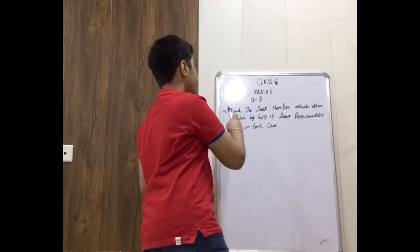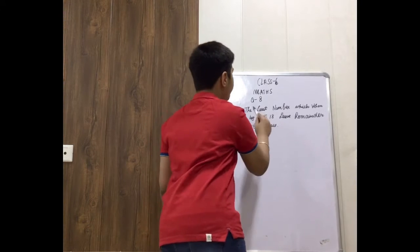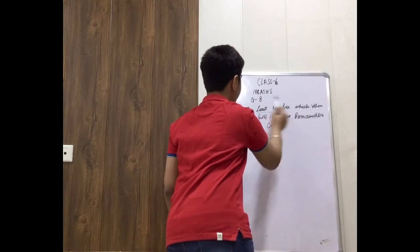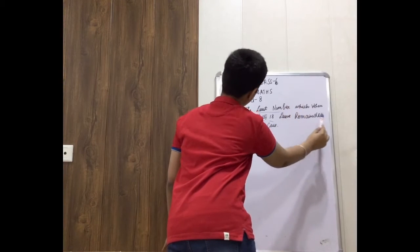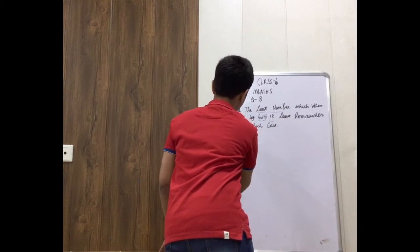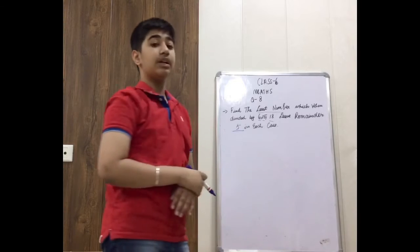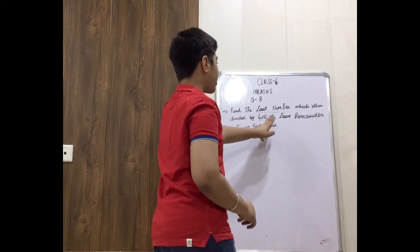First, the question says: find the least number which when divided by 6, 15 and 18 leaves remainder 5 in each case. Now in this, you can see we are given 3 numbers and we have to find the least number, which suggests LCM.